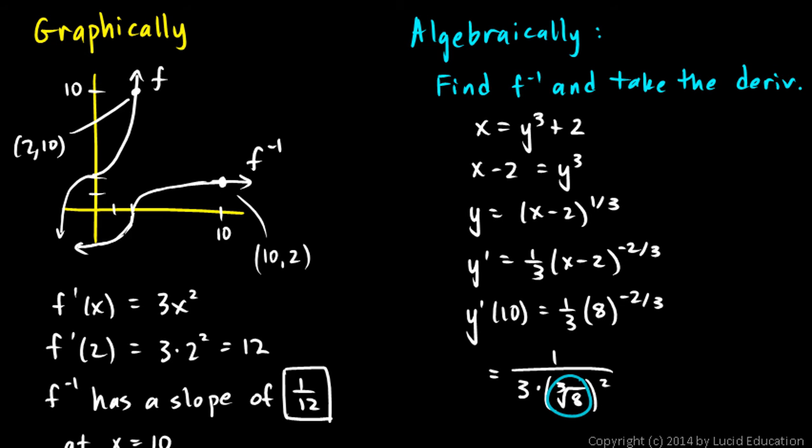2 squared is 4, and multiply it by 3 and we get a 12 in the denominator. So this is 1/12. How about that?